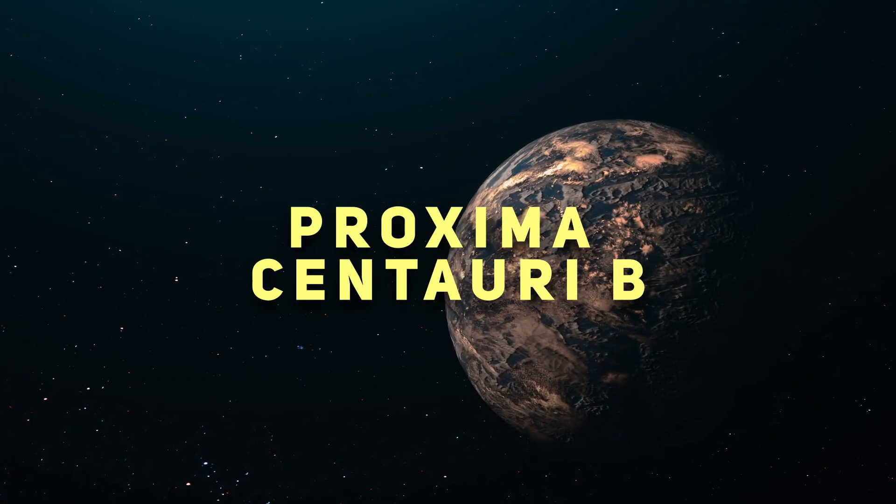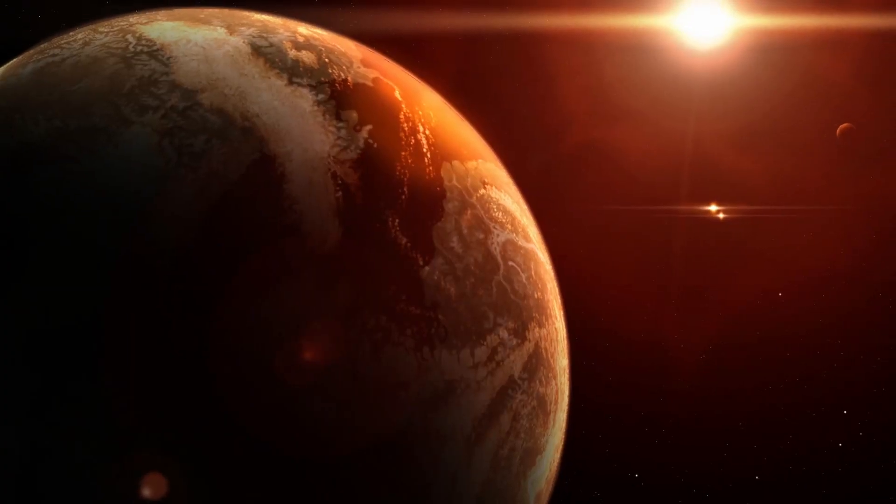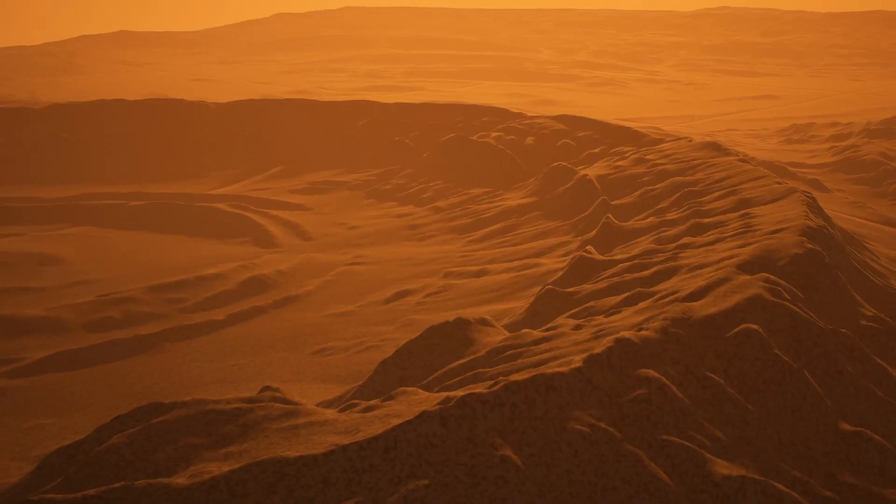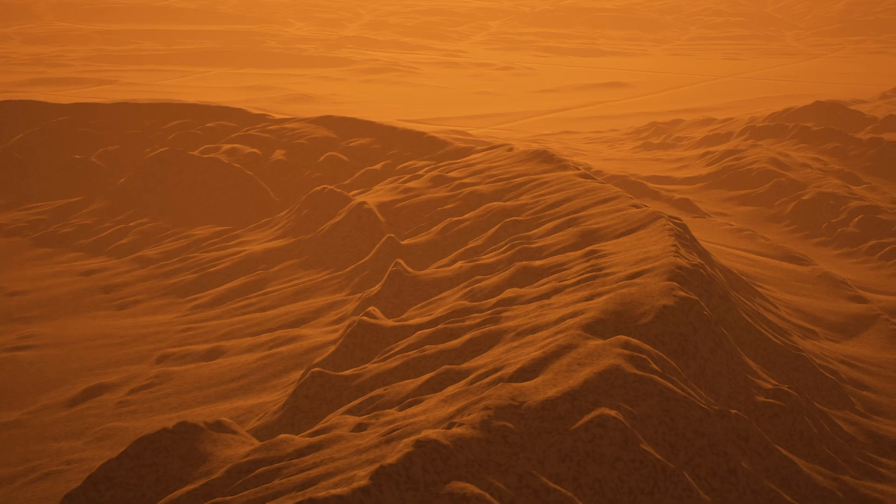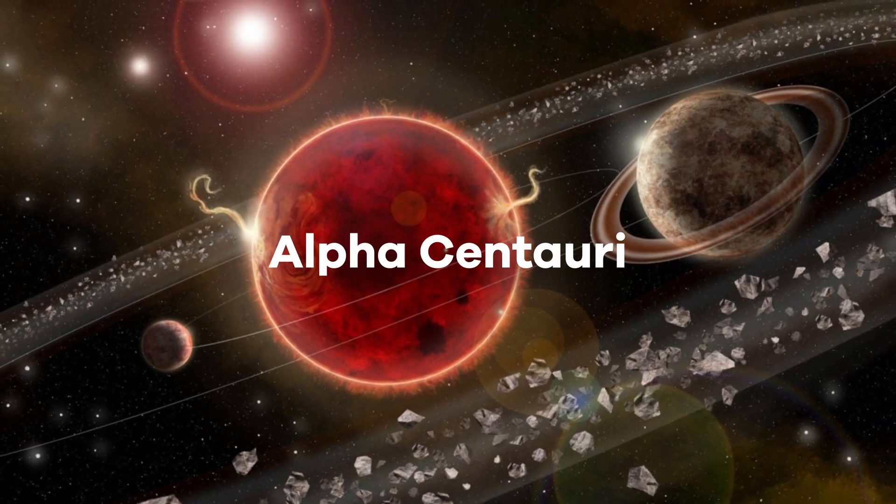Proxima Centauri b, also known as Proxima b, is the nearest exoplanet to our solar system, and it's even more Earth-like than scientists initially believed. This alien world orbits a red dwarf star called Proxima Centauri and is part of the larger triple star system known as Alpha Centauri.